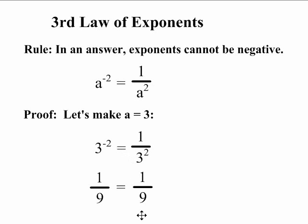So our calculator says 3 to the negative 2 is equal to 1 ninth. But 1 over 3 squared is also equal to 1 ninth. This proves that the third law is true. a to the negative 2 must be equal to 1 over a squared.